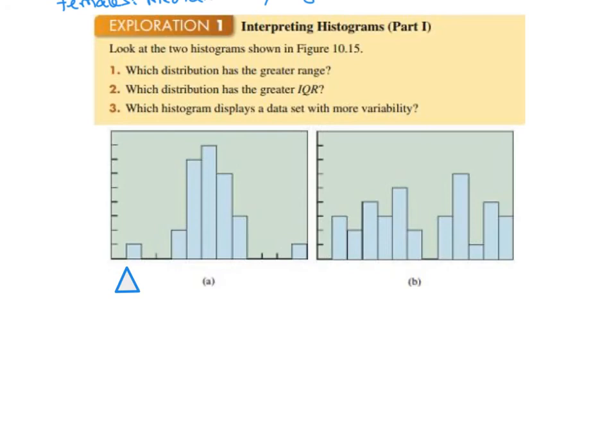The histogram on the left spans 1, 2, 3, 4, 5, 6, 7, 8, 9, 10, 11. Whereas, the histogram on the right goes 1, 2, 3, 4, 5, 6, 7, 8, 9, 10, 11, 12. So the histogram on the right has the greater range.